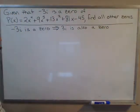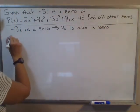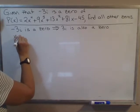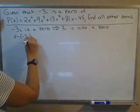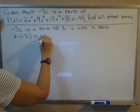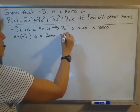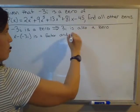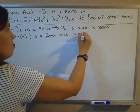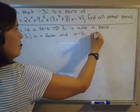Using the factor theorem, this means that x - (-3i) is a factor, and since 3i is also a zero, x - 3i is a factor.